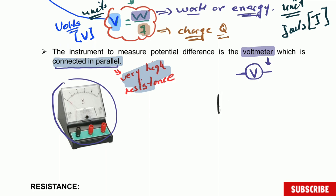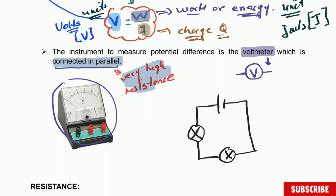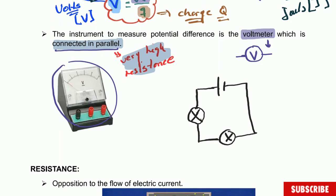When you do connections in parallel, be careful because this is not mathematics — this is physics. It does not mean two lines that never cross. Here, it means that the terminal points of the instrument are the same as the terminal points of the component in the circuit. For instance, if you have two light bulbs and want to measure the potential difference of one of them, you connect a voltmeter in parallel: one terminal of the voltmeter is connected to one terminal of the bulb, and the other terminal is connected to the other side. That is how we connect a voltmeter in parallel to any component of the circuit.